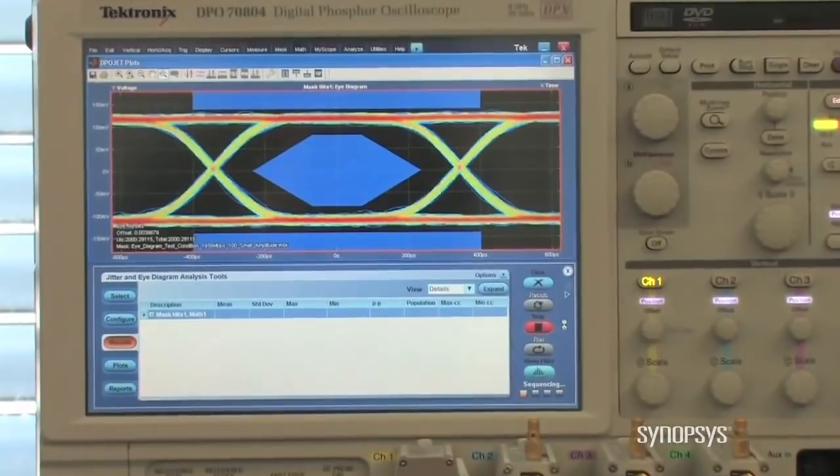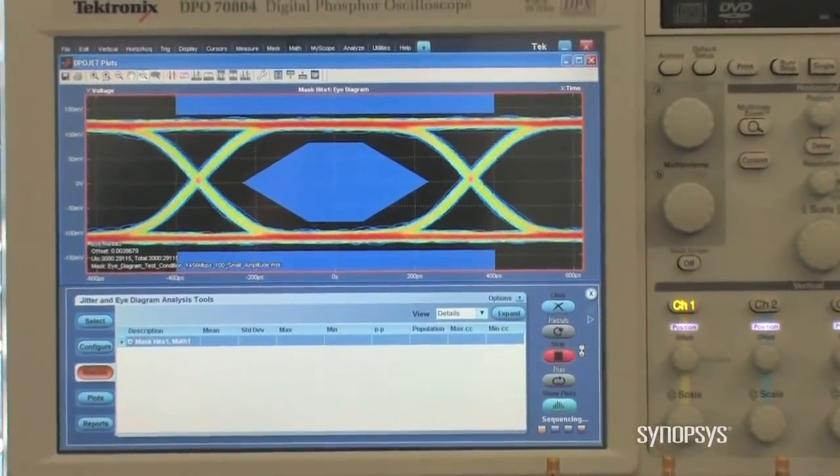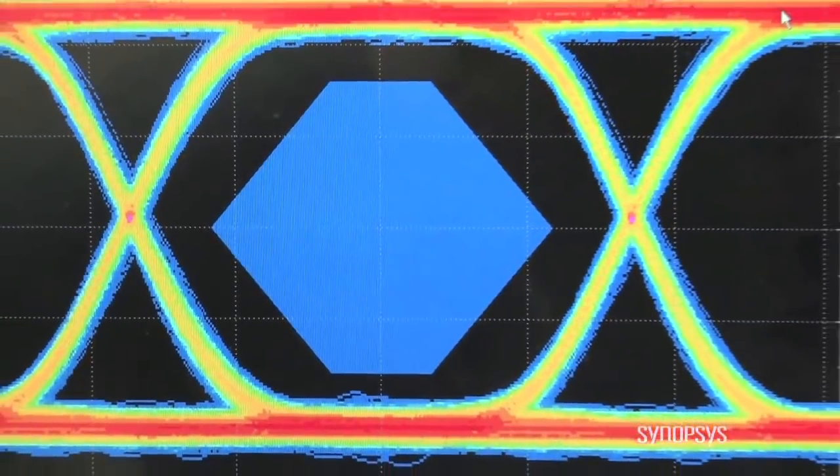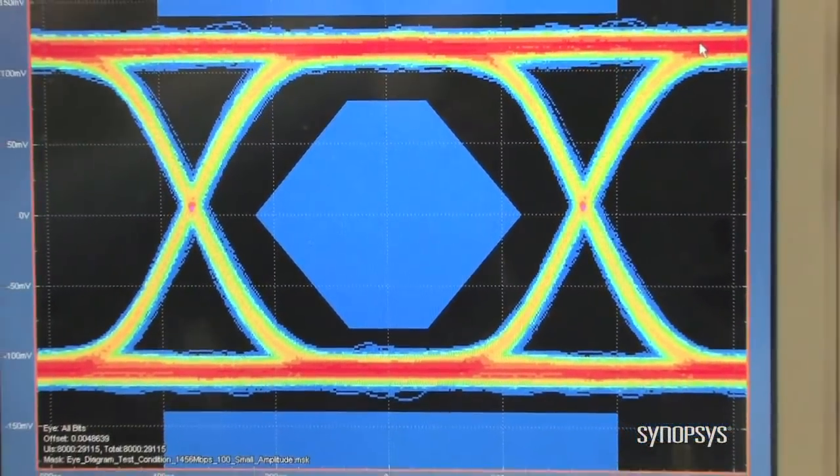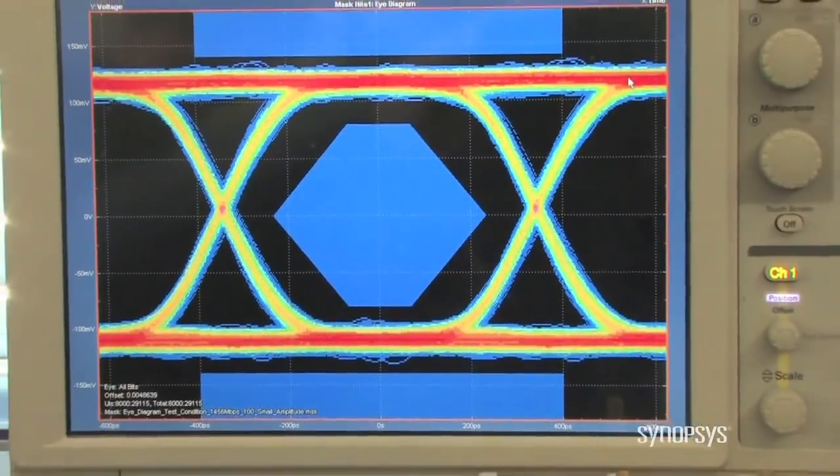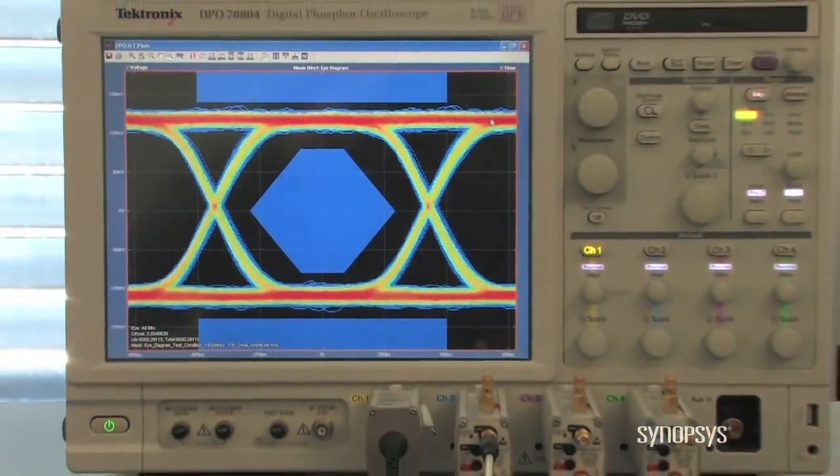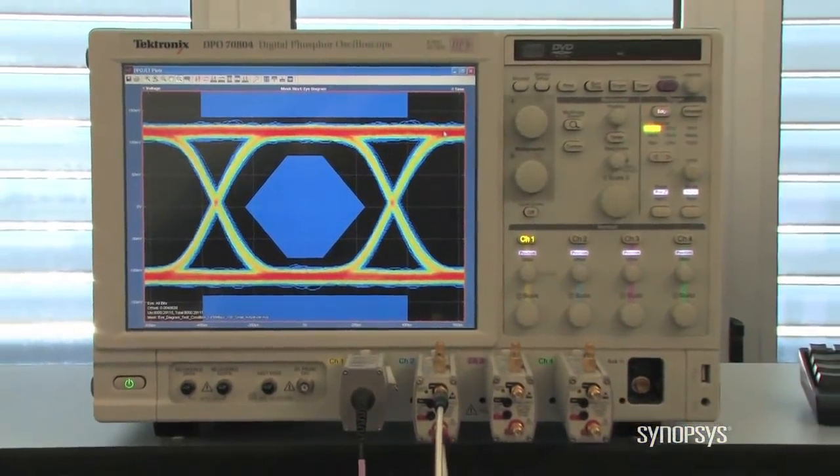The farther away the yellow line is from the blue line, the higher signal quality it represents. Another quality factor is represented by the thickness of the yellow line. The thinner it is, the less jitter it has on the transmission. As can be seen, the eye diagram with small amplitude configuration presents good quality and high margins.